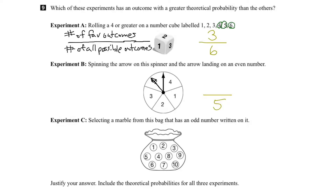Now we have to determine how many of the spots represent an even number. Let's erase our arrow so we can see. This piece here is an even number, this piece here is an even number, and this piece here is an even number. So there are 3 favorable outcomes, and the number 3 goes on the top of our ratio. So there's a 3 out of 5 chance of landing on an even number.